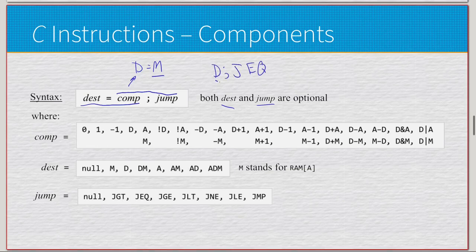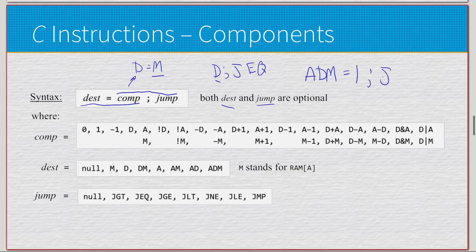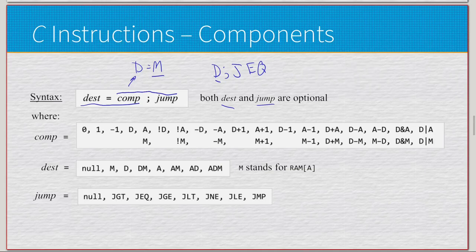And then we have D semicolon JEQ, D is a computation, JEQ is a jump. So, technically, a valid hack instruction could be something like this. This would register as a valid hack instruction. Never do this. Ever, never, just never do this. But I digress. Essentially, anything that we can put in the format of destination equals computation semicolon jump will translate to some 16 bit value that the computer can process.